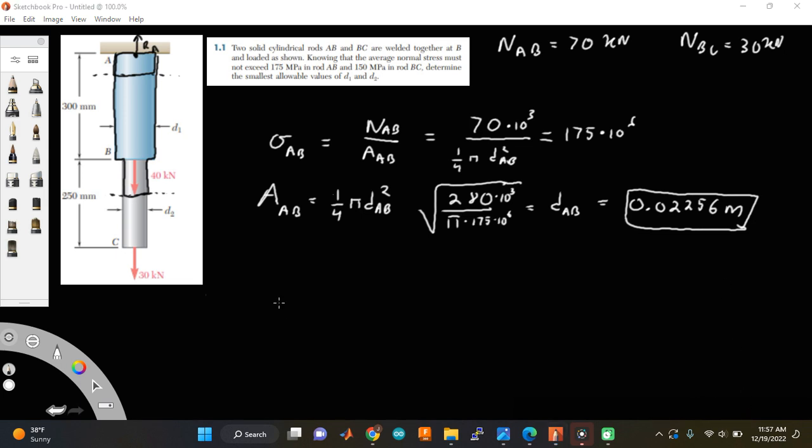And I'm going to do the same exact thing for the next one. So stress in BC is equal to NBC divided by the area of BC. Because they are both cylindrical rods, the cross-sectional area of BC must be equal to one-fourth pi times BC's diameter squared. And I know what NBC is. It's 30 kilonewtons,